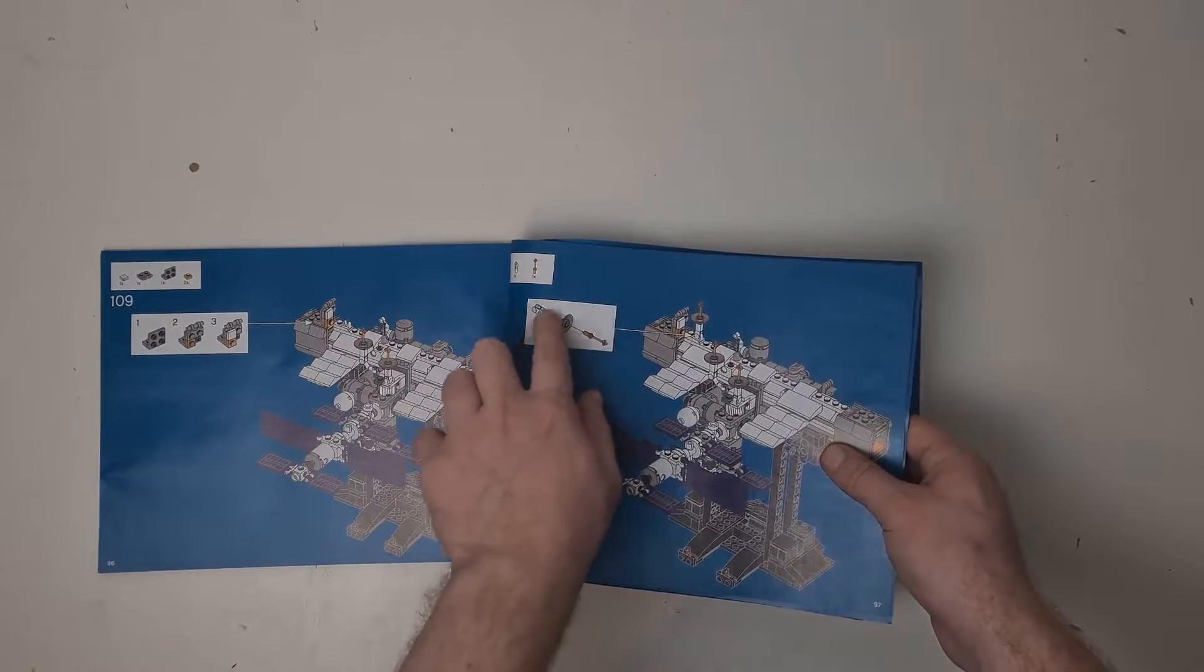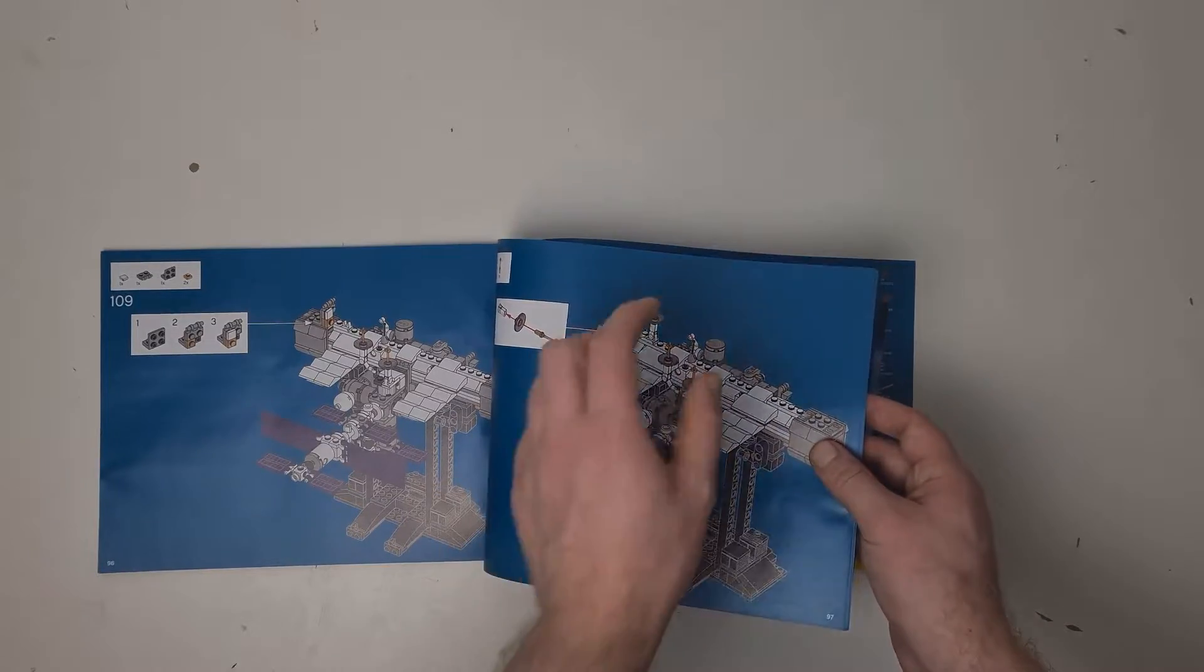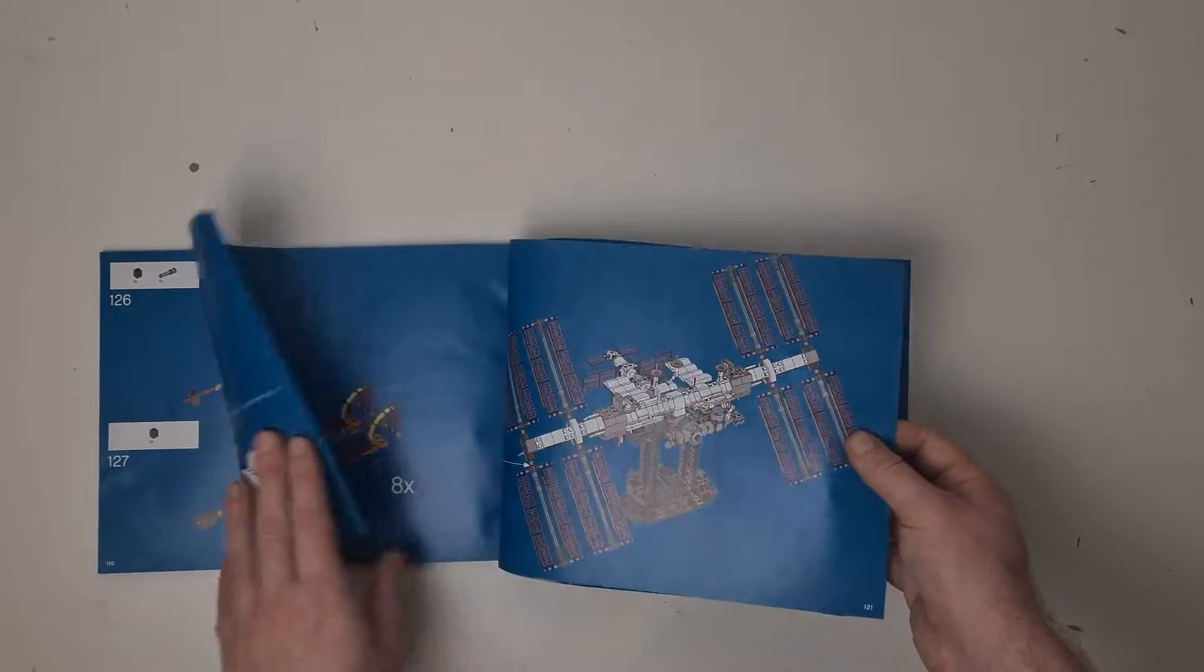They have put the white boxes in to show the individual building steps, but whenever you're putting a piece on the set itself it's slightly harder to see exactly where it needs to go.